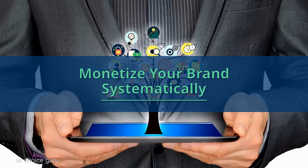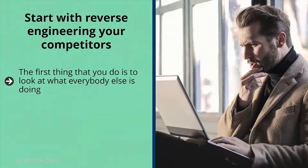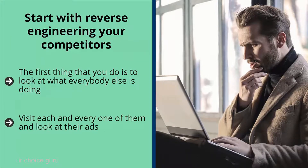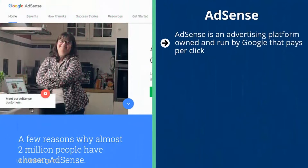Monetize your brand systematically. Start with reverse-engineering your competitors. Look at what everybody else is doing — how do you think they make money from their websites? Visit each competitor and look at their ads. Collate your notes for all competitors and identify what they have in common. AdSense: AdSense is an advertising platform owned by Google that pays per click. When AdSense detects text on a page, it tries to show contextually targeted ads.